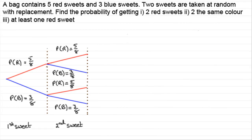In an earlier tutorial, I showed you how to draw up a probability tree diagram. If you're unfamiliar with this, just go back on the site and have a look at how to draw probability tree diagrams. What I want to do in this one is show you how we can combine probabilities to work out probabilities of particular events. We're going back to the example: a bag contains five red sweets and three blue sweets, where we take two sweets out at random with replacement.